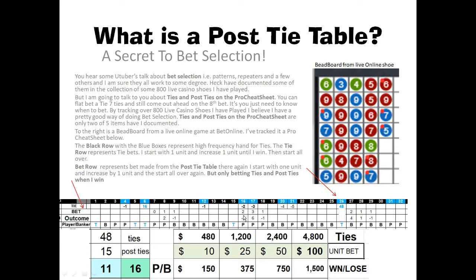Then we go down to hand 16 — there was a tie on hand 15. It said bet banker, I bet banker, I lost two units. It said bet player, and I won six units. Then it said bet banker again, and I lost one unit. Then over here at hand 26, there's a tie — we won that tie. I bet because the post-tie table said it was going to be a banker, and it was a banker, so I had four units there. It said the next hand was going to be a player — it was, I won a unit. And the third hand after the tie it said player, but it was a banker, so I lost a unit.